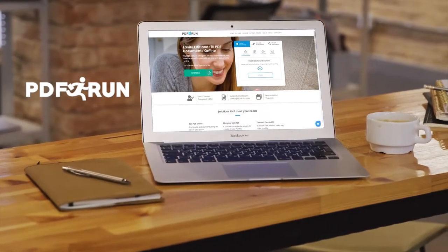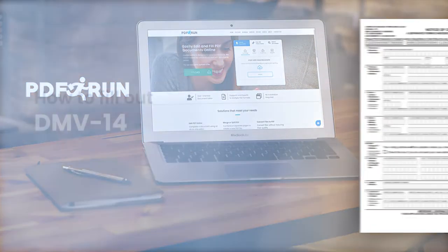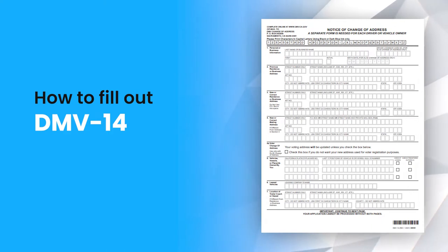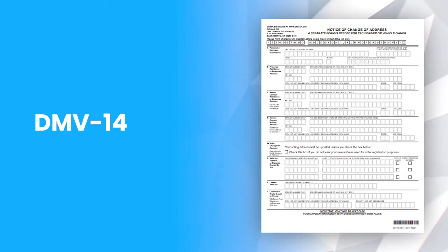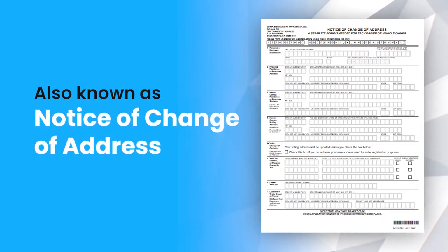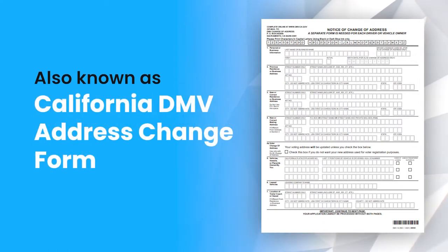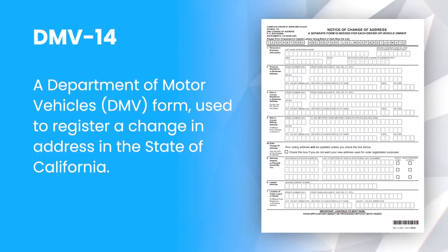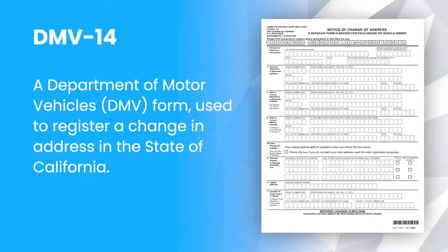Welcome to PDF Run. In this video, we'll guide you on how to fill out Form DMV-14. Form DMV-14, also known as Notice of Change of Address and California DMV Address Change Form, is a Department of Motor Vehicles form used to register a change in address in the state of California.